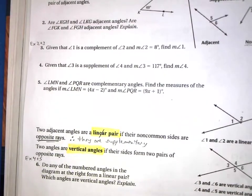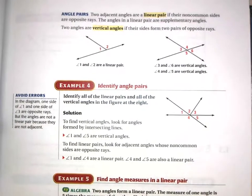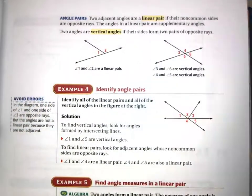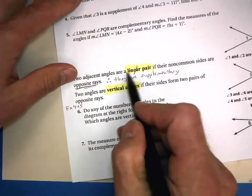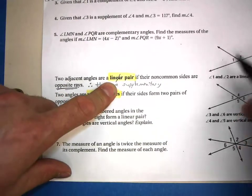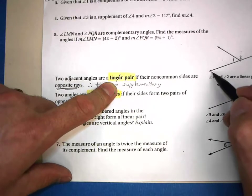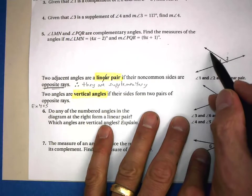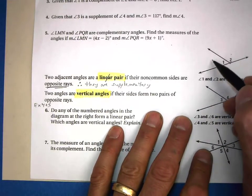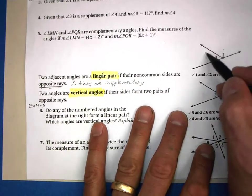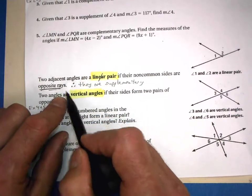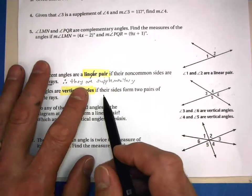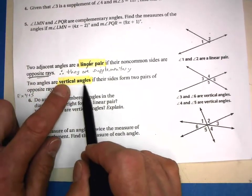Now let's look at our last two special angle relationships. A linear pair: when you see the word linear, think of line. A linear pair consists of adjacent angles formed by opposite rays — they share the same vertex, point in different directions, and share a common side. The sum of a linear pair is always 180 degrees; therefore, linear pairs are always supplementary.